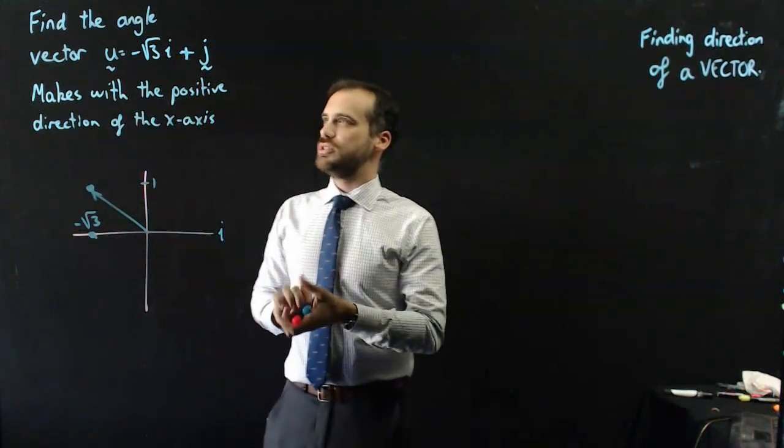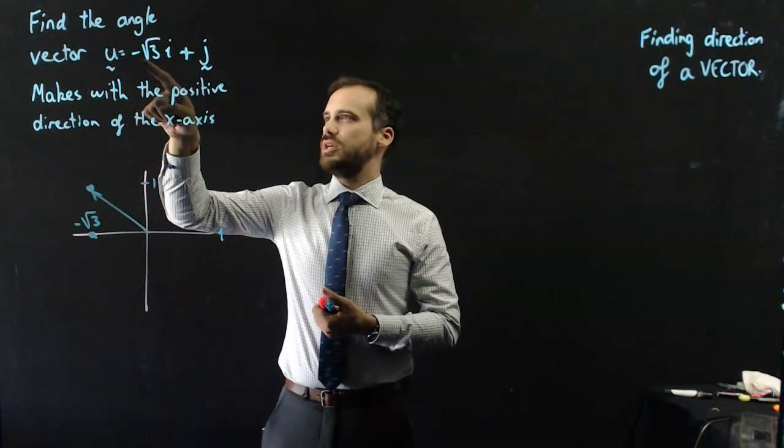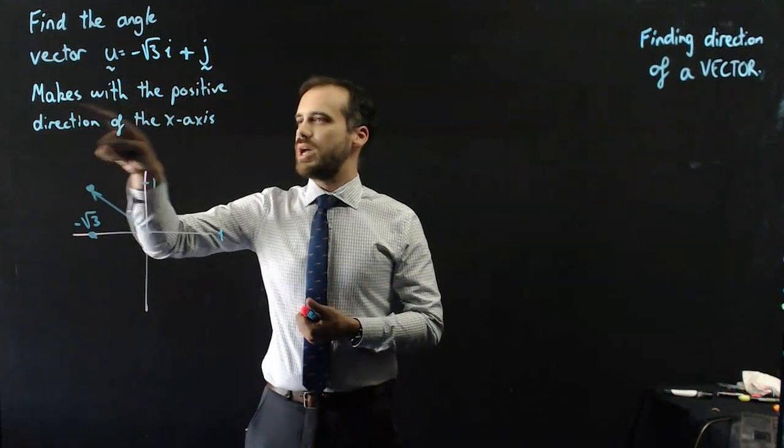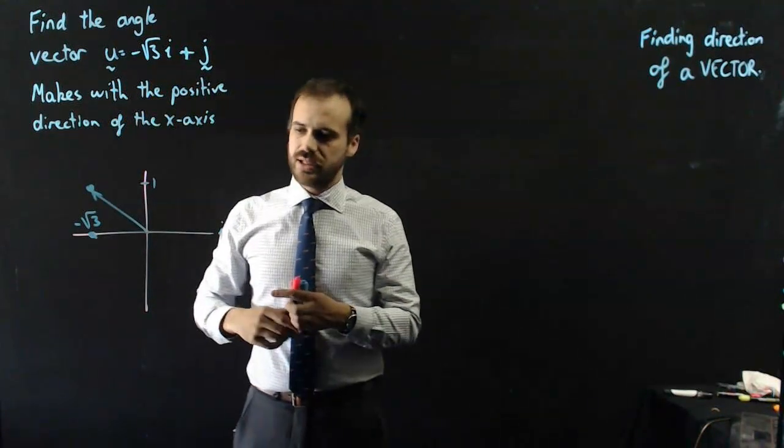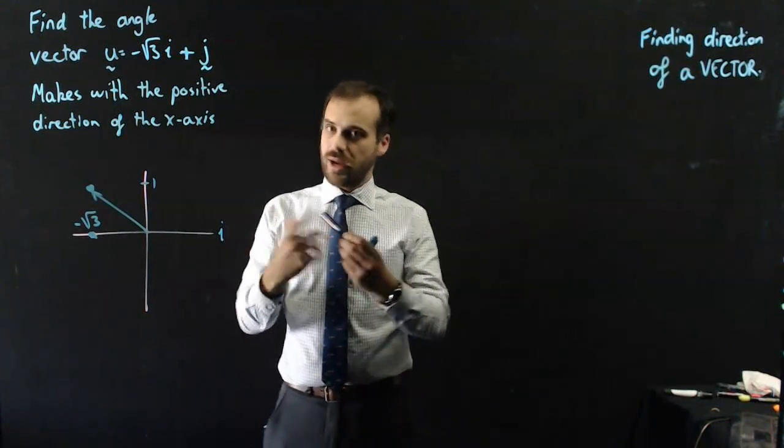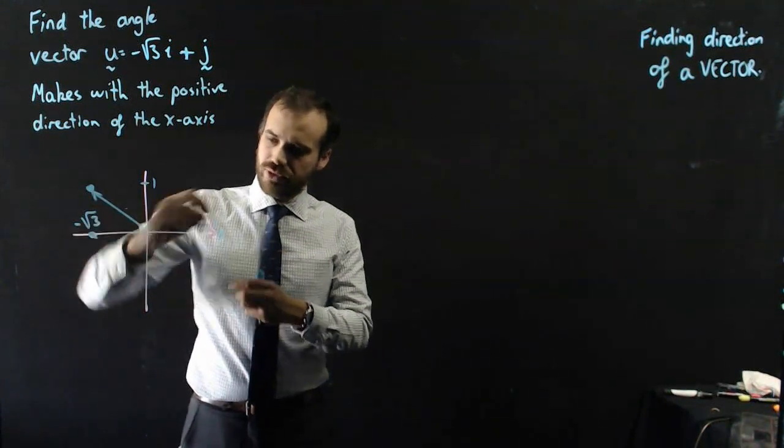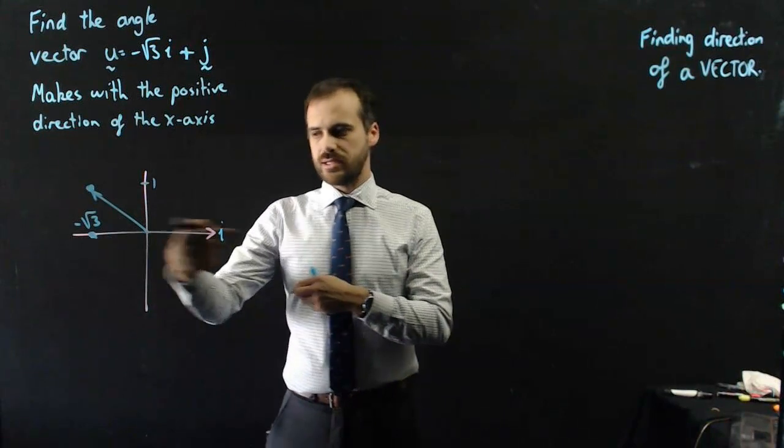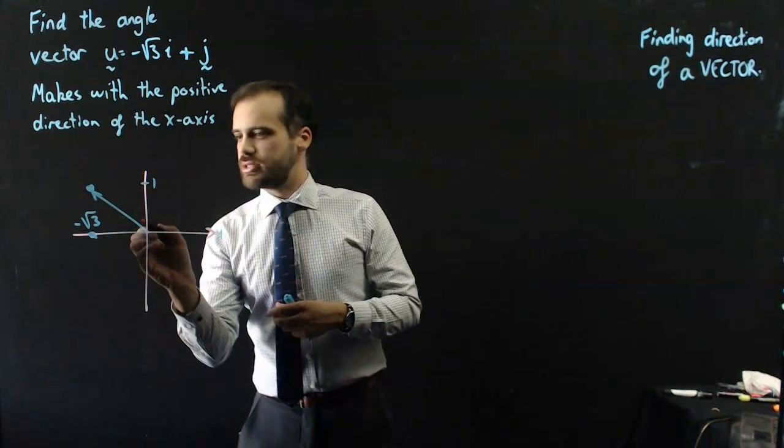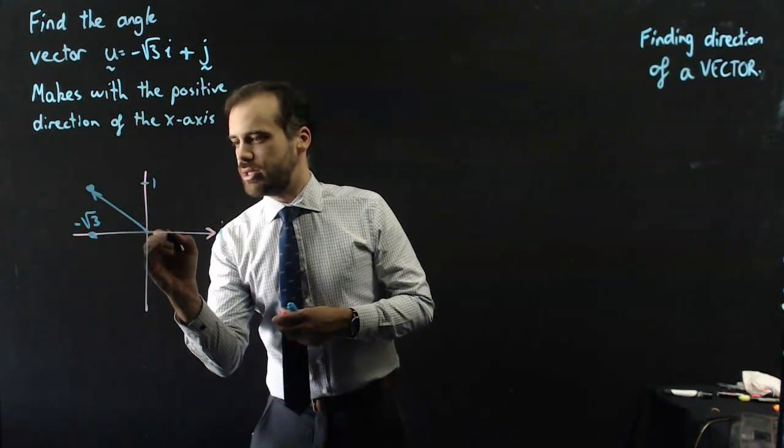Now the question says, Find the angle vector u equals negative root 3i plus j makes with the positive direction of the x-axis. If a question asks you this, and it happens all the time, this is the positive direction of the x-axis. And so the angle that they're asking for is this one here.